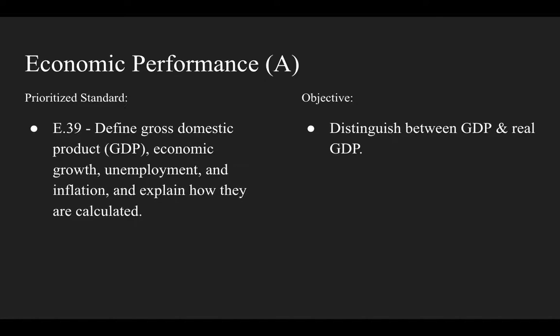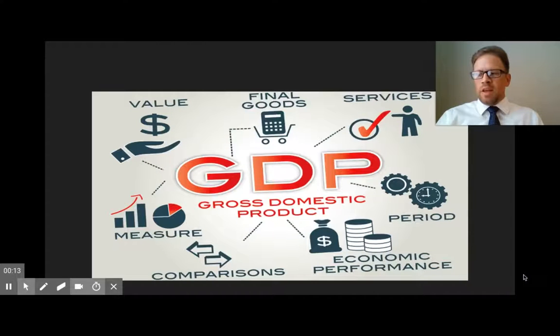Hello, this is Economic Performance, Section A Lecture. Our prioritized standard is Economic Standard 39. Objectively, we're going to distinguish between GDP and real GDP. Gross domestic product, simply called GDP, is the total market value expressed in dollars of all final goods and services in an economy in a given year.